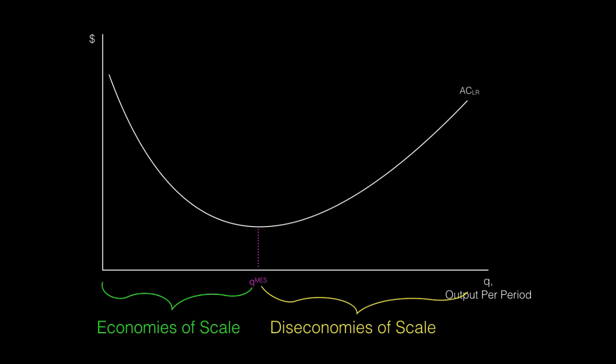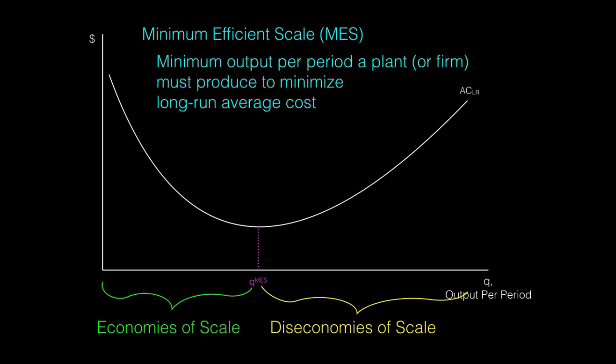QMES is the lowest point on the long run average cost curve. This is where the firm experiences minimum efficient scale. Minimum efficient scale is the minimum output per period a plant or firm must produce to minimize long run average costs.